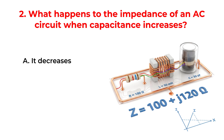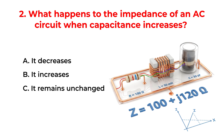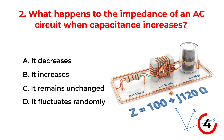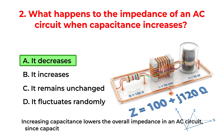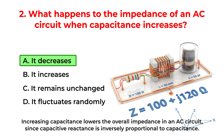A. It decreases. B. It increases. C. It remains unchanged. D. It fluctuates randomly. The correct answer is Option A: It decreases. Increasing capacitance lowers the overall impedance in an AC circuit, since capacitive reactance is inversely proportional to capacitance.